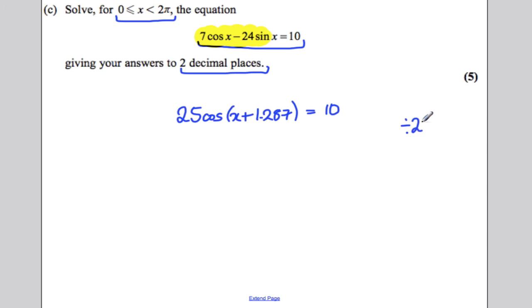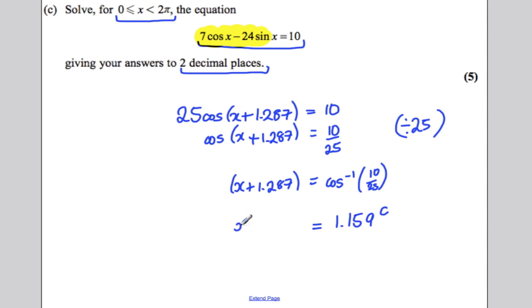Now divide both sides by the 25 in front of this cos. So we would get cos of x plus 1.287 is equal to 10 divided by 25. And therefore, x plus 1.287 must be the inverse cos of 10 over 25. And keeping your calculator in radians, the inverse cos of 10 over 25, that's equal to 1.159 radians. So x plus 1.287 will equal this.